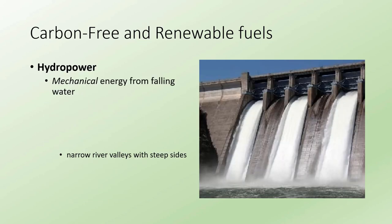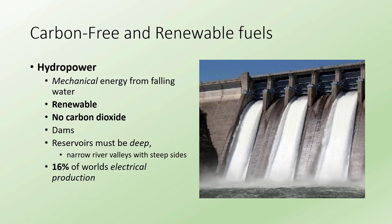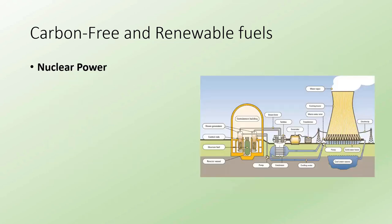Hydropower is another renewable energy — this is using stored potential energy that as it falls is converted into kinetic energy, used to spin a turbine that then generates electricity. It's a renewable energy with no carbon dioxide other than what it took to construct the dam itself. It requires dams with deep reservoirs, and narrow river valleys with steep sides are usually the best because you need to transform that potential into a good amount of kinetic energy. Today about 16% of the world's electrical production is done through hydropower.